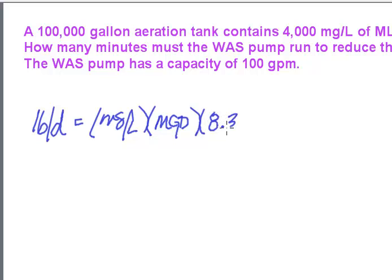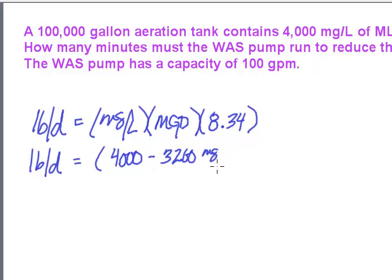I'm going to figure out how many pounds of solids I actually want to remove from the tank. The milligrams per liter that I want to remove is actually going to be the difference between the two concentrations. I currently have 4,000 and I want 3,200 milligrams per liter. So the difference between those two is how many solids we're actually going to remove from the tank.